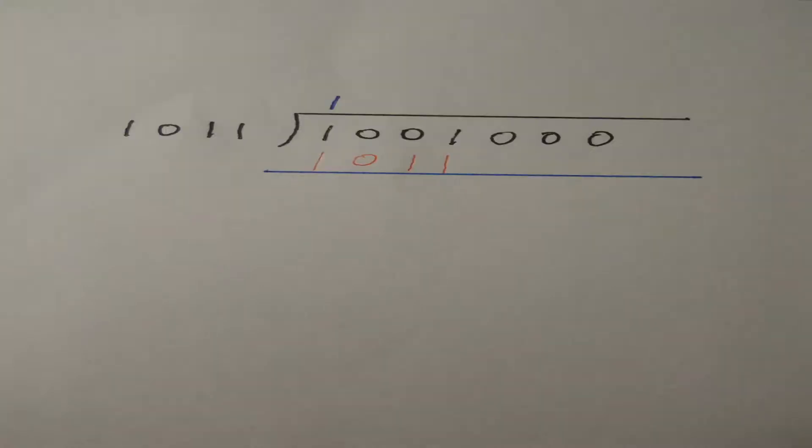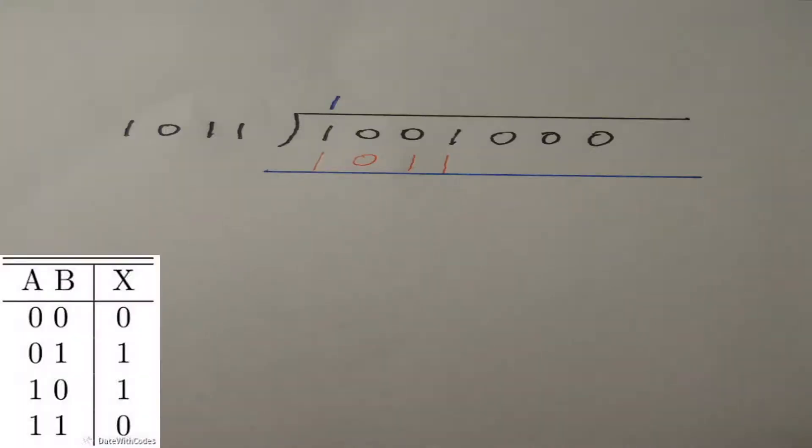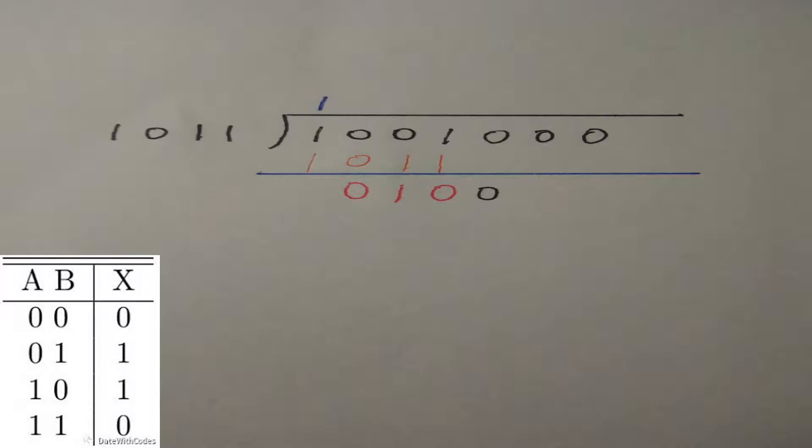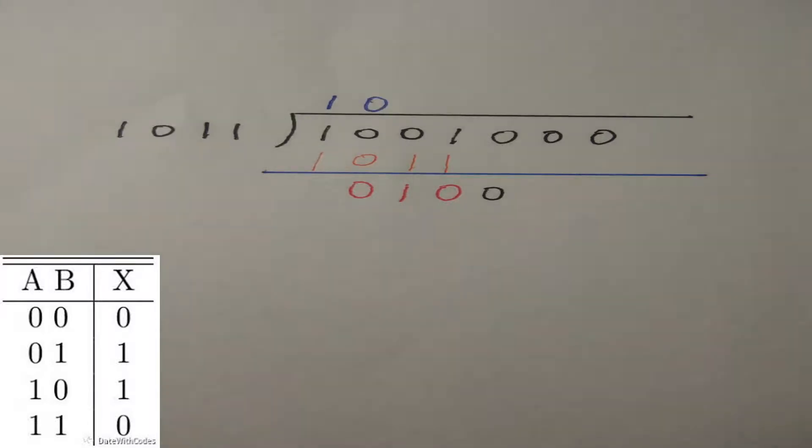The next step is using XOR to calculate 1001 and 1011. Then we can get 0100. Now put all down and do the same thing again. Put 0 as quotient, then put 0000 down.